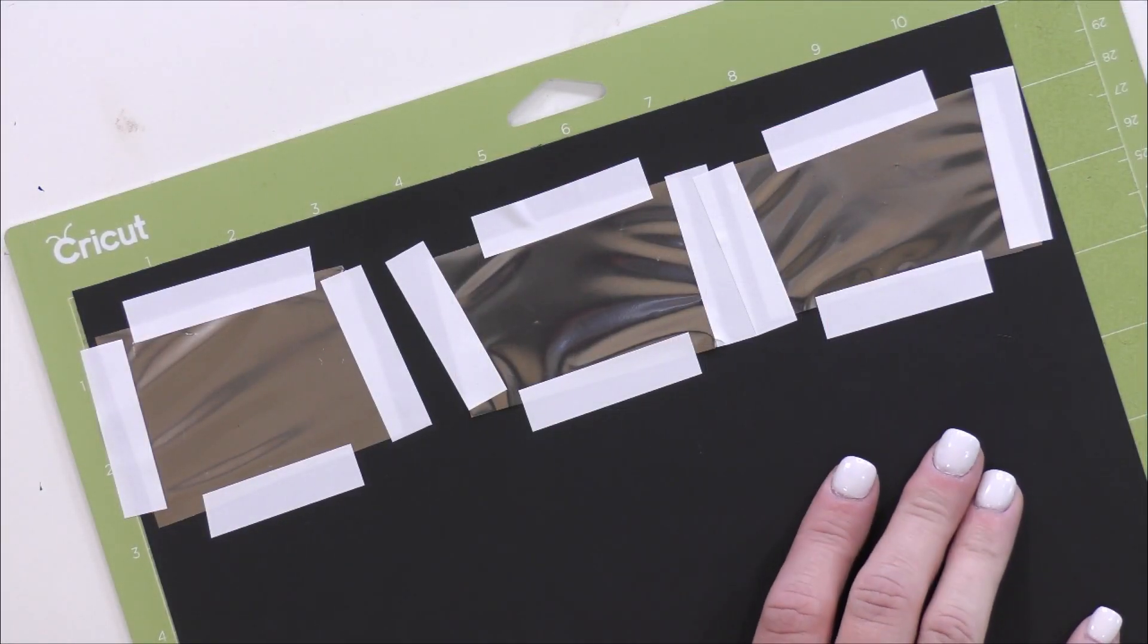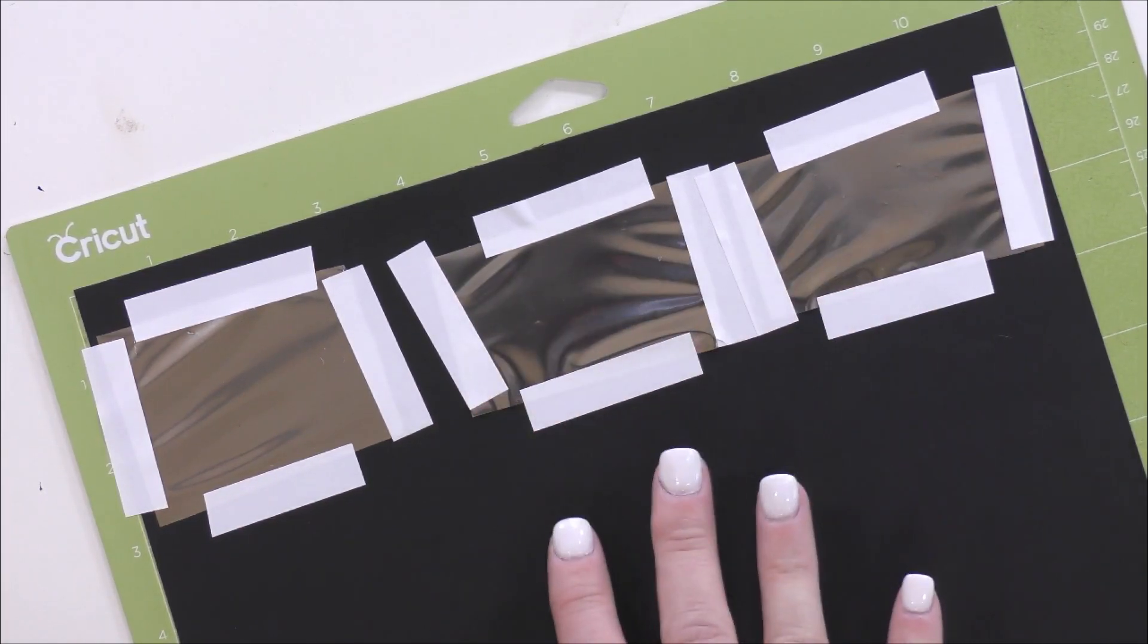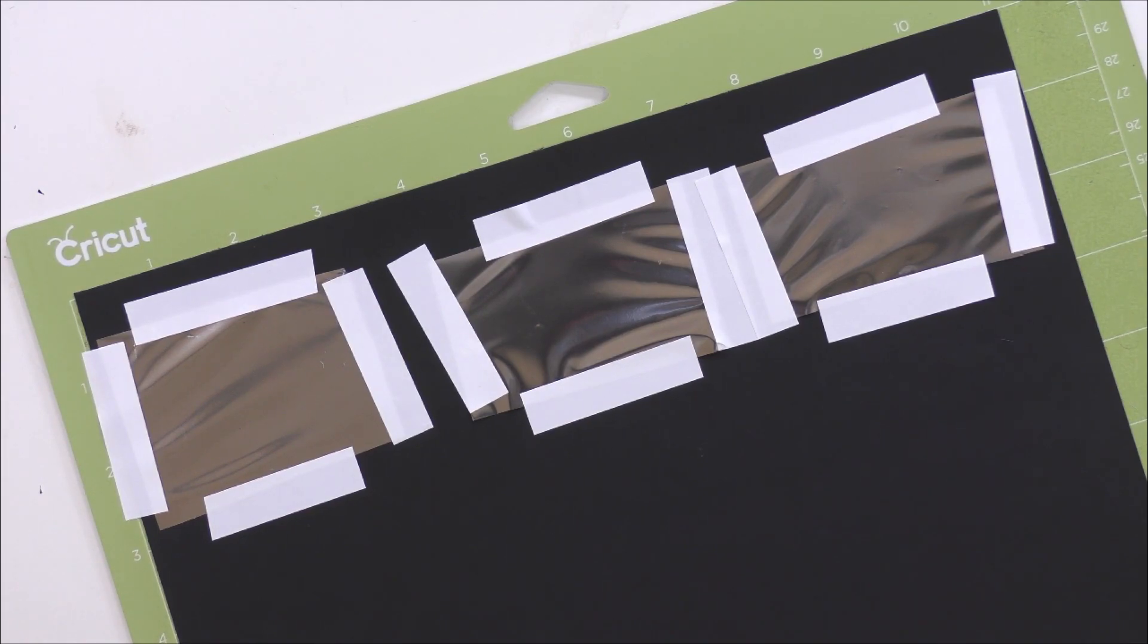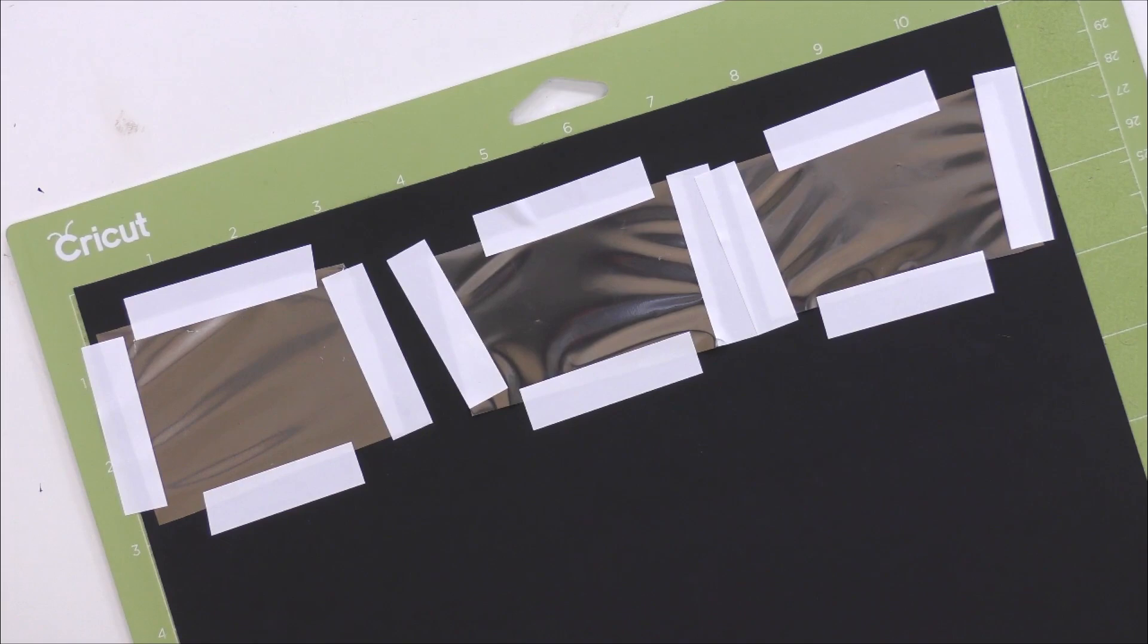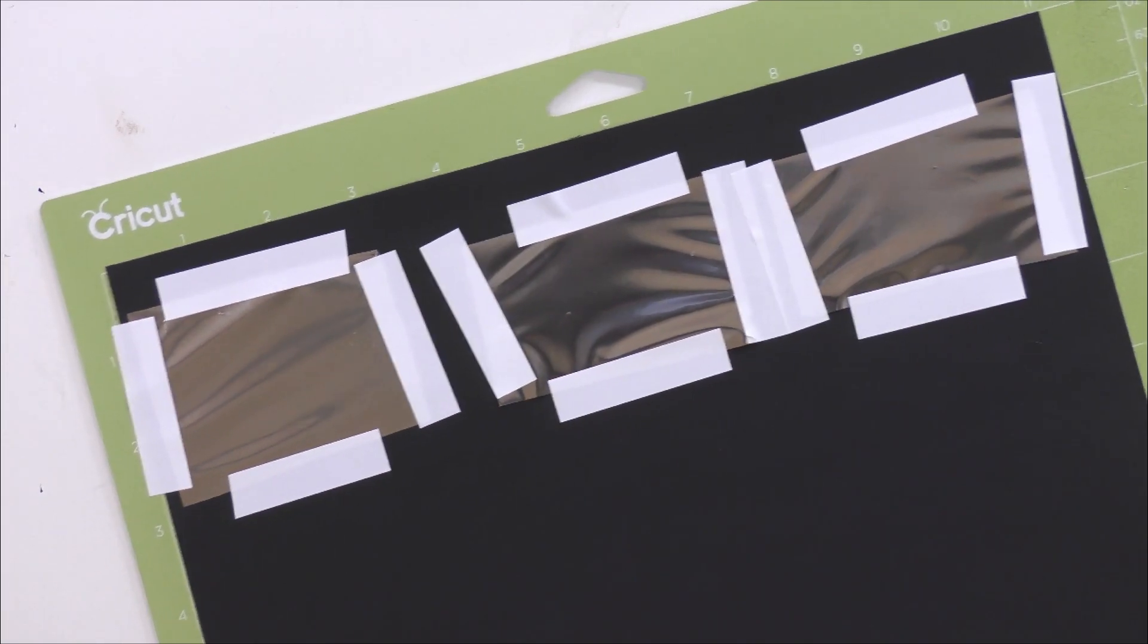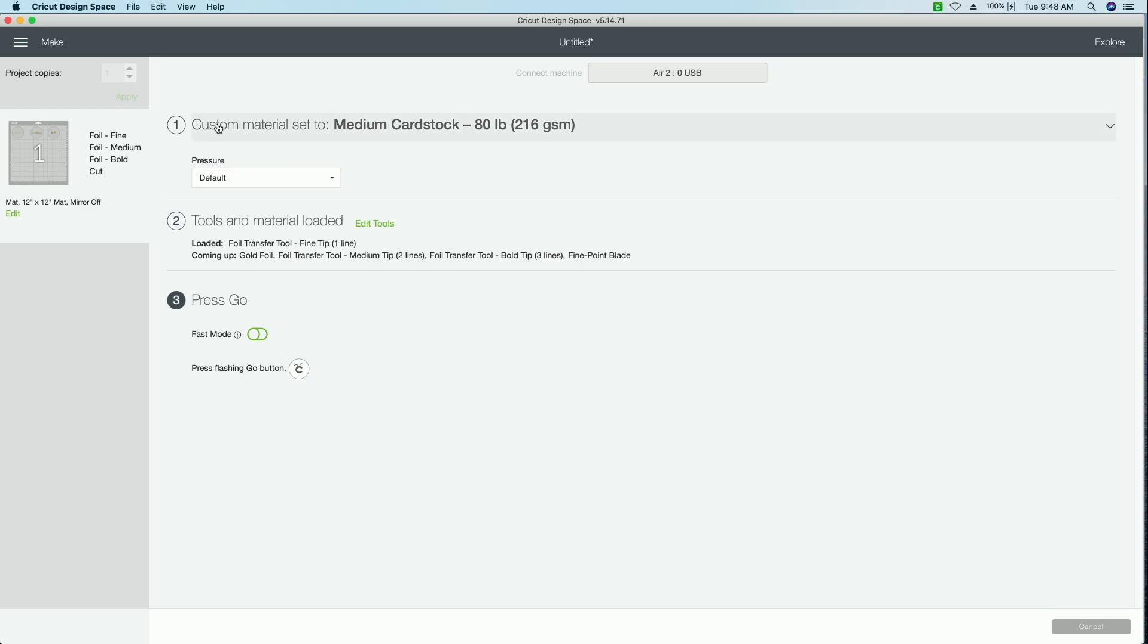Okay. I do have the mat loaded now, and I've put my foil on the cardstock slash mat in the corresponding places on the mat where it will be transferred over. So now I can load this mat into the machine and I can go ahead and install the tool that Design Space is prompting me to install. So I just want to show you once I did load my mat and I selected medium cardstock as my material. And you can see over here, all the tools that we're going to be using for this particular mat. We have the fine, the medium, the bold and our fine point blade.